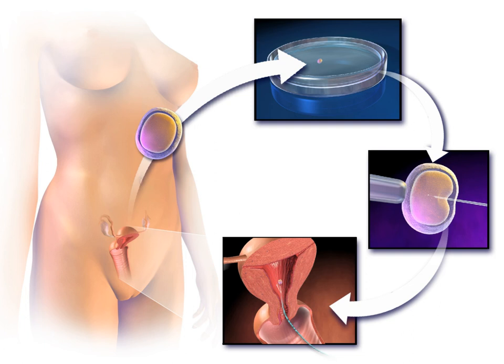Intracytoplasmic sperm injection is beneficial in the case of male factor infertility where sperm counts are very low or fertilization failed with previous IVF attempts. The ICSI procedure involves a single sperm carefully injected into the center of an egg using a microneedle. With ICSI, only one sperm per egg is needed; without ICSI, you need between 50,000 and 100,000.